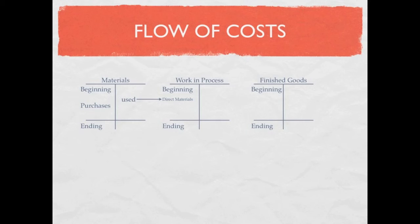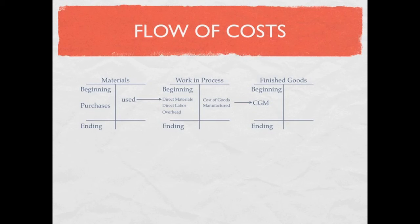There are other materials called indirect materials that do not go directly into work in process — we'll cover those later. In addition to direct materials, we have direct labor and overhead in our work in process account. Remember, those three costs together are called product costs. Once a good is completed it comes out of work in process and moves into finished goods — this is called cost of goods manufactured. Once the product is sold, we call that cost of goods sold.